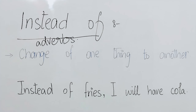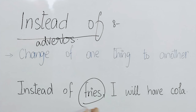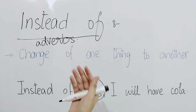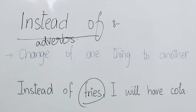For example, you go to a restaurant and you go to the counter or reception to order. You first said fries — you wanted to order fries, you said 'I need fries, I will have fries.' But after that you changed your mind and decided that you need a cola, not fries. So how do you say this? You use instead of.